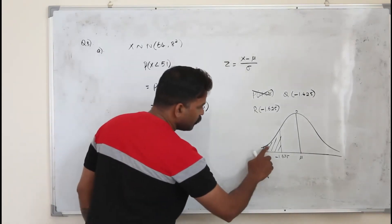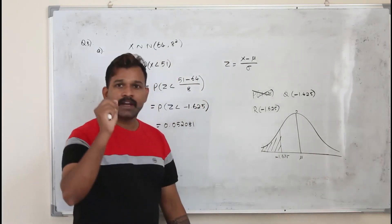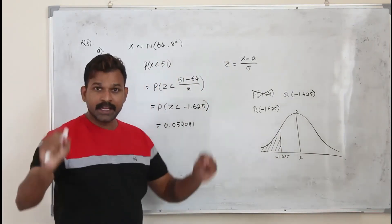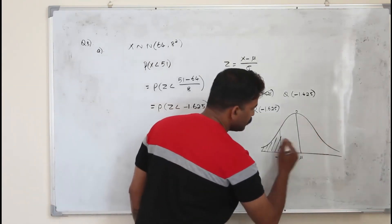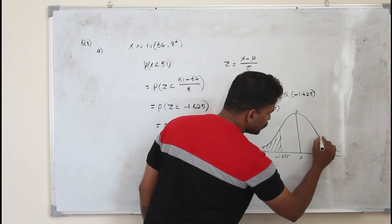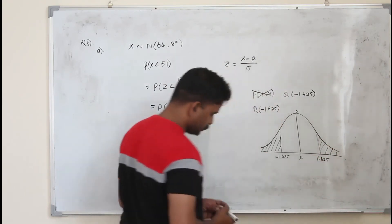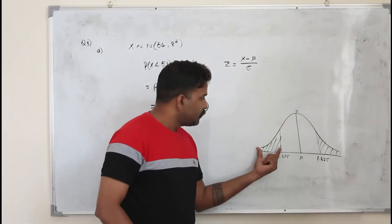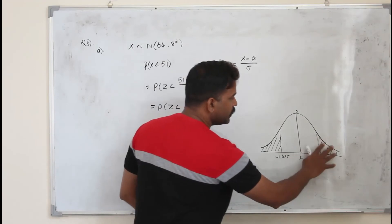Now you see, they want you to find this area. It's a negative number. You cannot use the data booklet, the big Z table, for the negative number. So what we are going to do, due to symmetry, this area will be same as this area. This is 1.625. So instead of this, we are going to find this value.